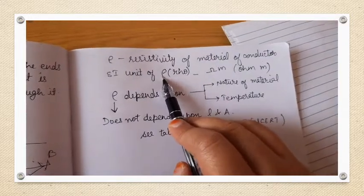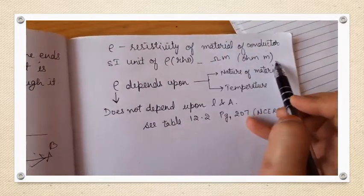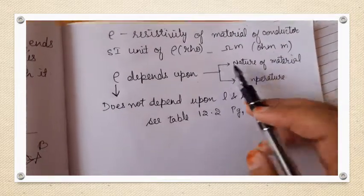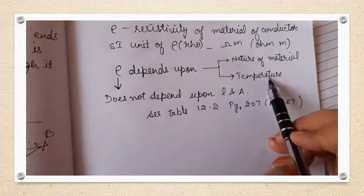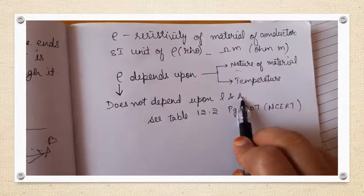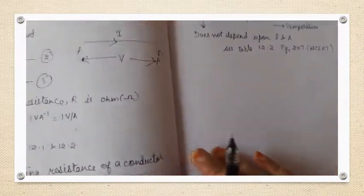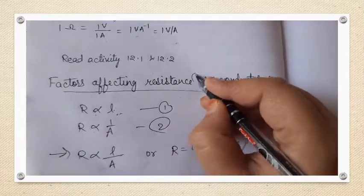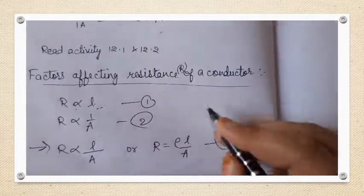Rho (ρ) is a Greek letter, and its SI unit is ohm-meter. Rho depends upon the nature of the material of the conductor and temperature. It does not depend upon length or area of cross-section.